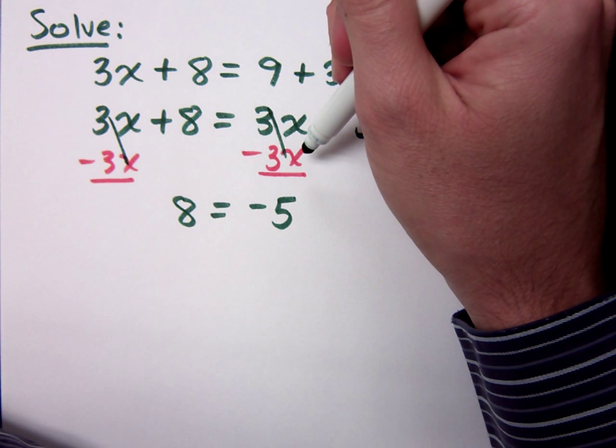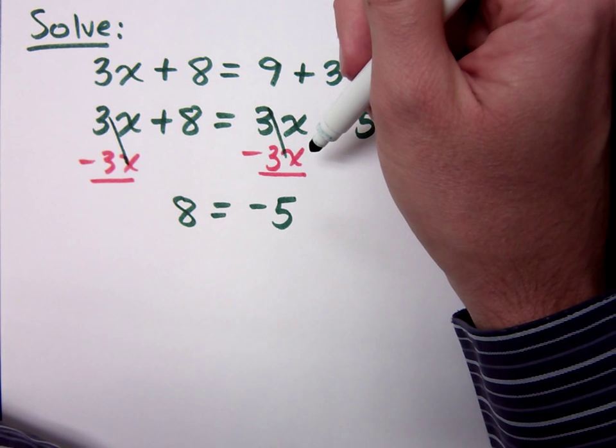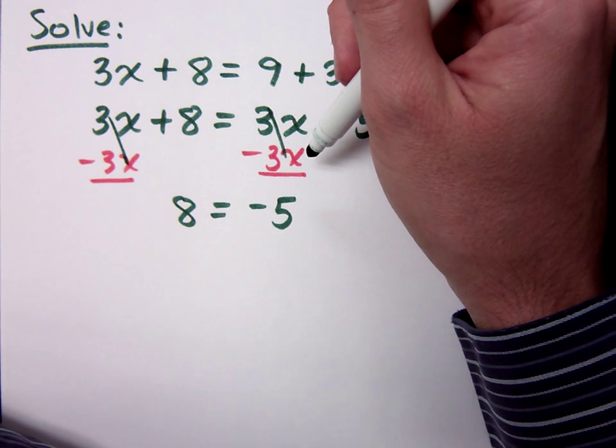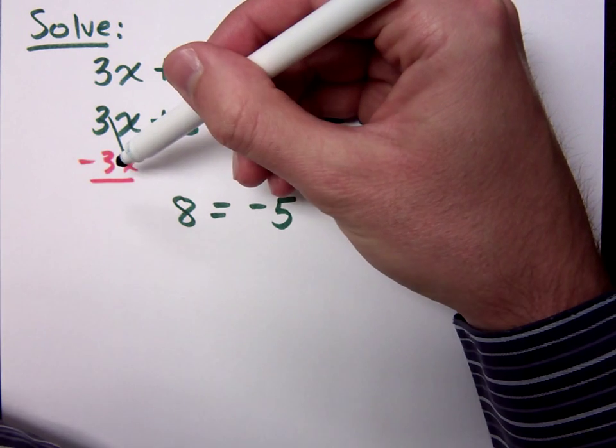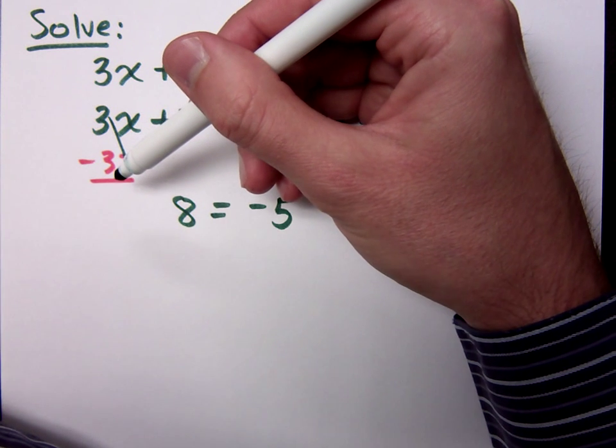X? If you have 3 apples and I take away 3 apples, what do you got? What you got? You got nothing. If you have 3 apples and I take away 3 apples, what you got over here? Nothing. Set up.